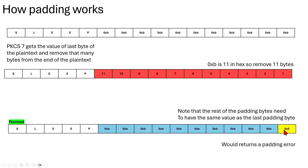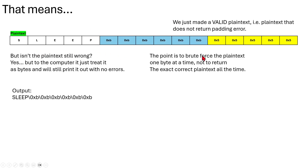All the padding bytes need to be the same value as the padding byte to remove it. So if you have 0x5 as the padding byte and the next padding byte is 0xB, it will return a padding error because it's not 0x5. That means if we manipulate the last 5 bytes into 0x5, we get valid plaintext — plaintext that does not return a padding error. The computer will just treat it as bytes and print it out with no errors. The point is to brute force the plaintext one byte at a time, not to return the exact correct plaintext every time.